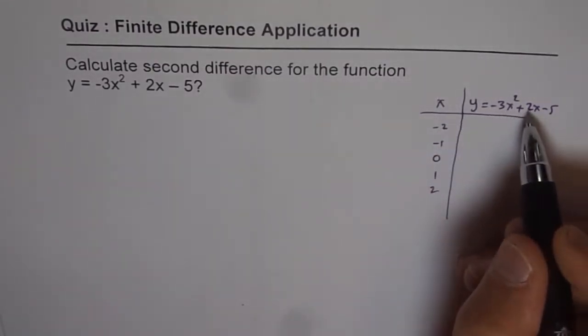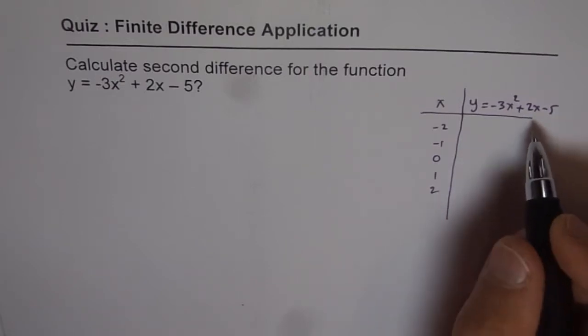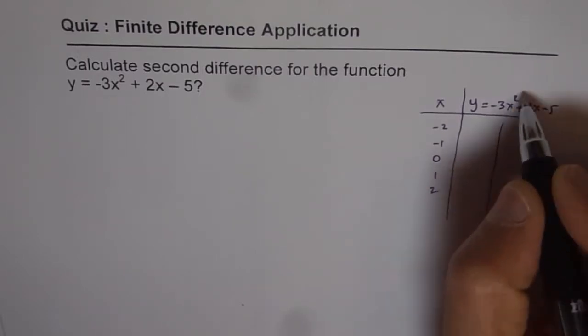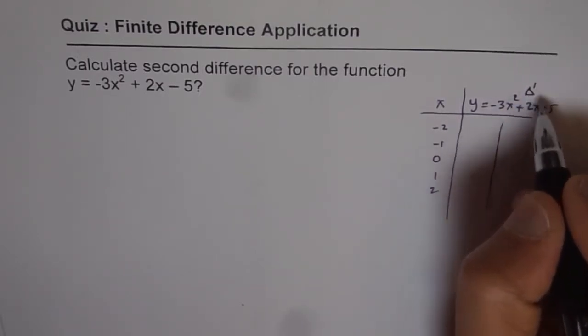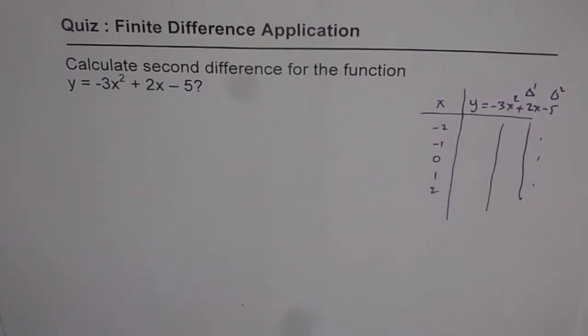Once you put these values in here then you can find the first difference and you will get ultimately the second difference. So you calculate these values and then you find the first difference, delta 1, and then you find the second difference which is delta 2, and these will be constant and then you get the answer.